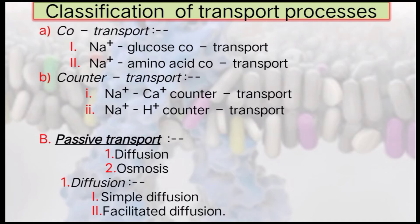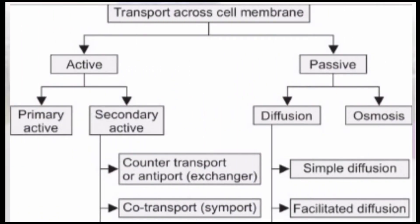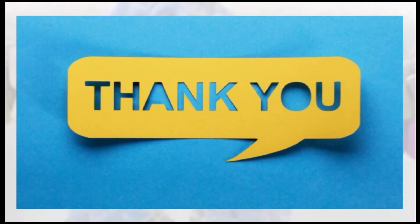Diffusion is further subdivided into simple diffusion and facilitated diffusion. This is the flowchart of the classification of transport mechanisms which occur across the cell membrane. Thank you for your patience in listening.